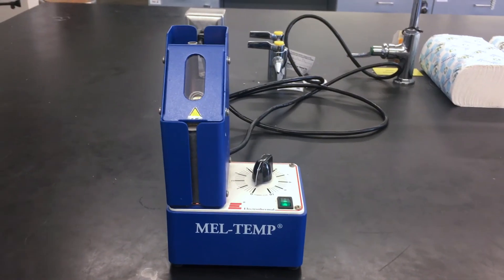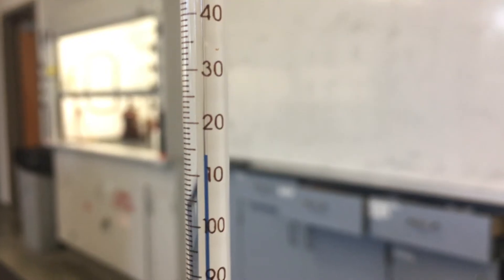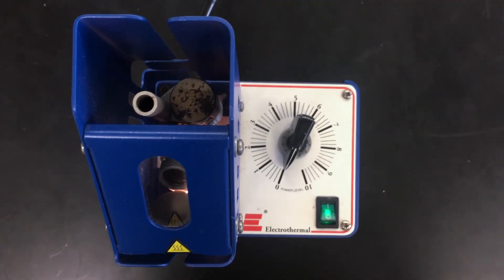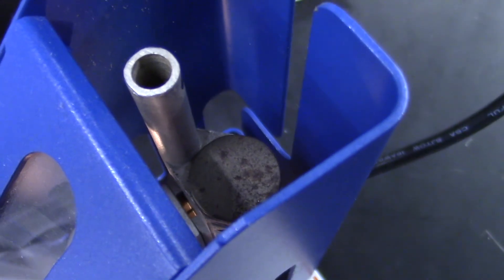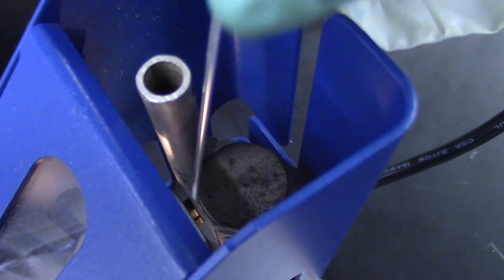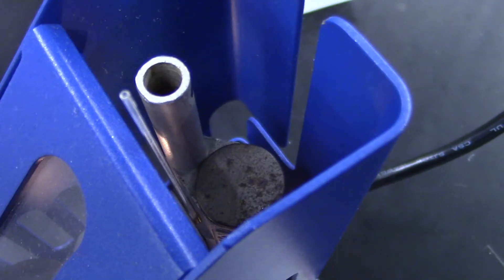The analog apparatus requires a mercury thermometer. It shall be inserted into the designated holder. Place the capillary in the same fashion as with the Digimelt device, and insert the thermometer.